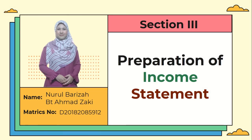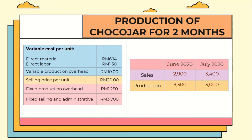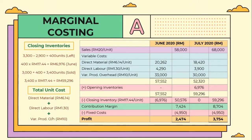We now move to section 3, which is the preparation of the income statement. Regarding the production of Chocojak for 2 months, our company provided the following details: variable cost per unit consisting of direct material and direct labor, variable production overhead, selling price per unit, fixed production overhead, and fixed selling and administrative expenses. Our company produced 3,300 units and managed to sell 2,900 units in June 2020. In July 2020, our company produced 3,000 units and managed to sell 3,400 units.